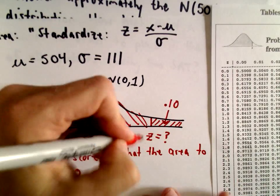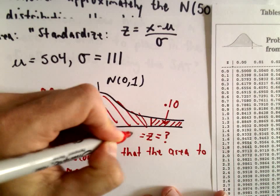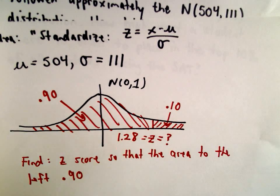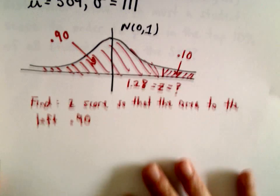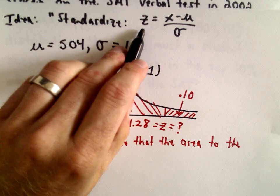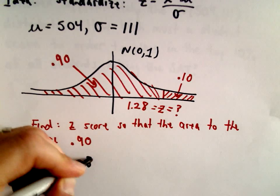So this is the z-score of 1.28. I want my z-score here to equal 1.28. So there's my 1.28.